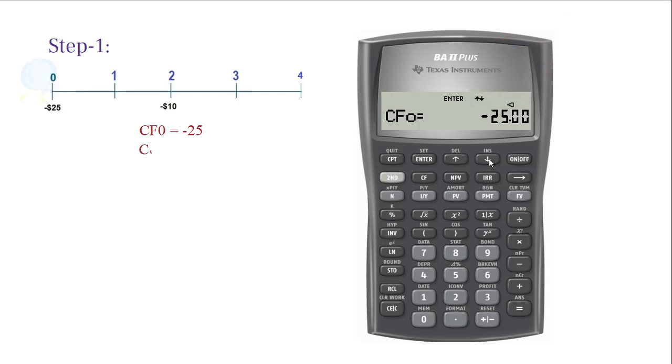Press 0 for cash flow 1. Press Enter. Press down arrow twice until you see cash flow 2. Press negative 10 and press Enter. When you are done entering all the negative cash flows,